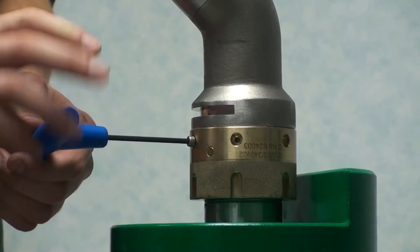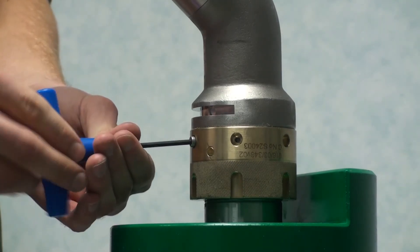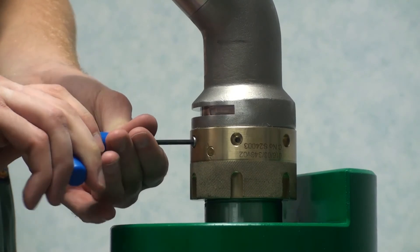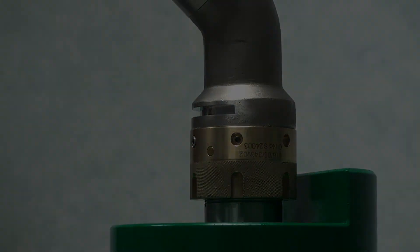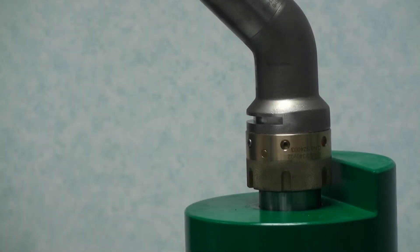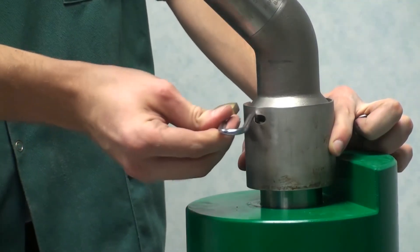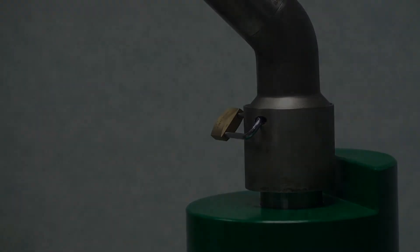To do this, tighten an M4 socket head cap screw into the fix ring and ensure that the screw head is flush with the outer diameter. If a stop is reached, then remove and fit in an adjacent hole. Slide the metal security guard back over the fix ring and fit the padlock through the two holes and into the slot machined in the surface connector body.